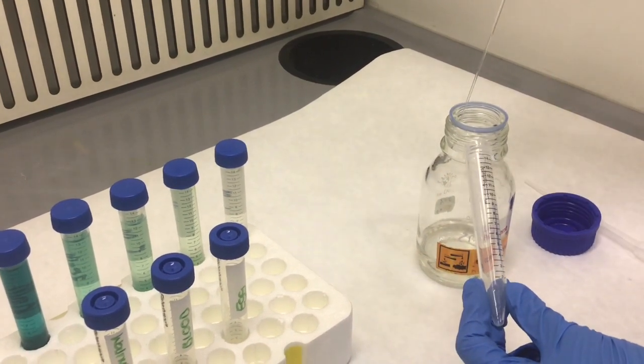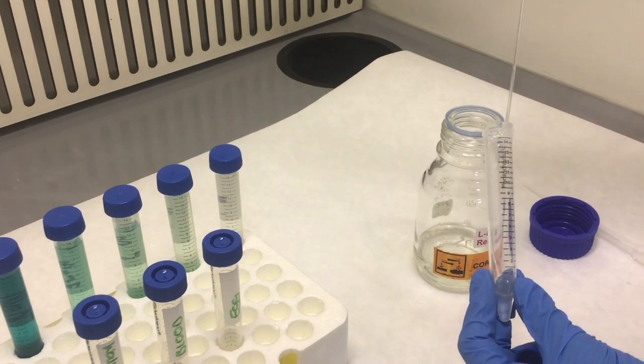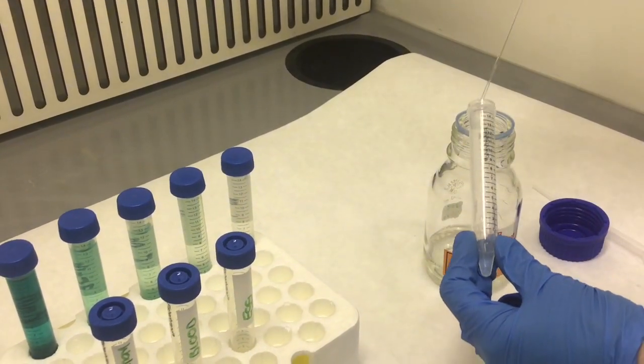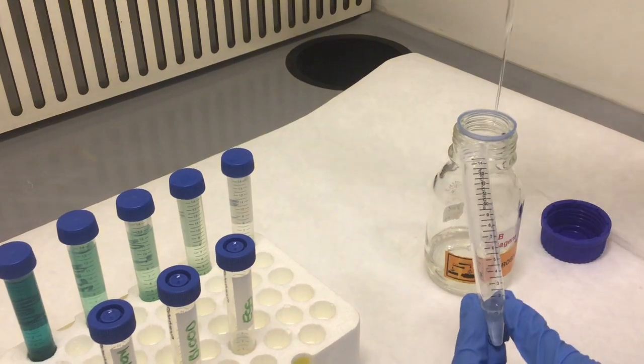Five milliliters of the Liebermann-Burchard reagent was added into a centrifuge tube. The reagent is made up of acetic acid, acetic anhydride, and sulfuric acid.